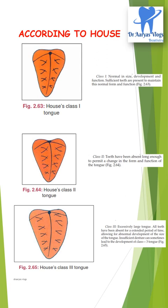According to House, the tongue can be classified into Class 1, Class 2, and Class 3. In Class 1, the tongue is normal in size, development, and function, and sufficient teeth are present to maintain this normal form and function.